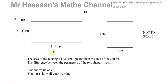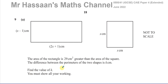This question is about forming equations from a worded problem. It involves areas and in the next part, volumes. It says the area of the rectangle, which is the first shape, is 29 centimeters squared greater than the area of the square. The difference between the two perimeters of the shapes is K. Find the value of K.